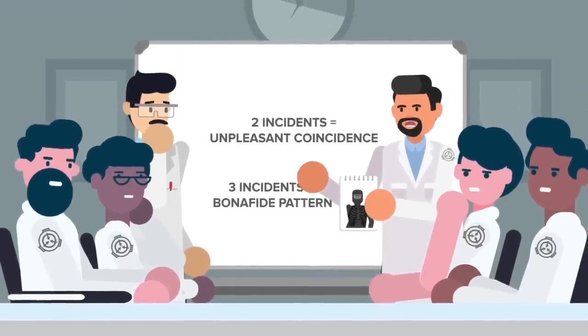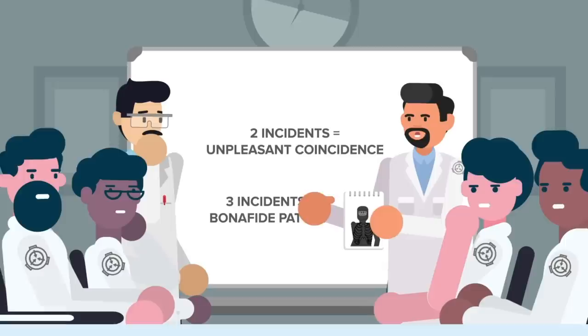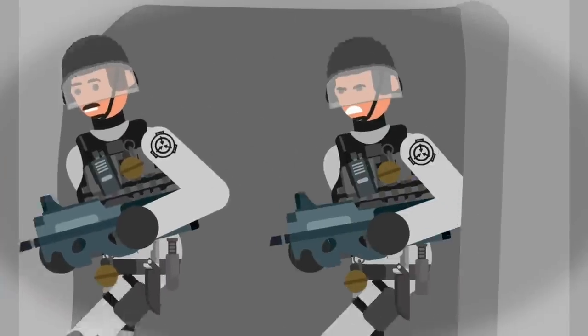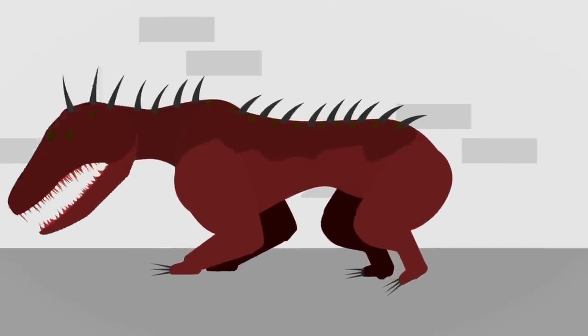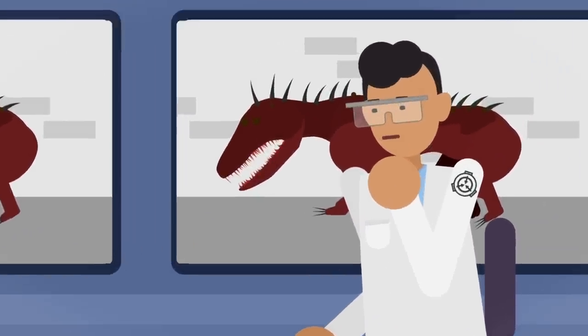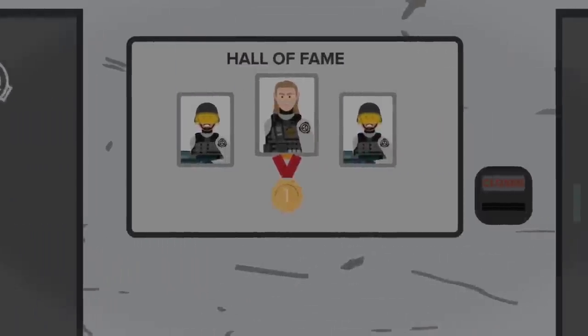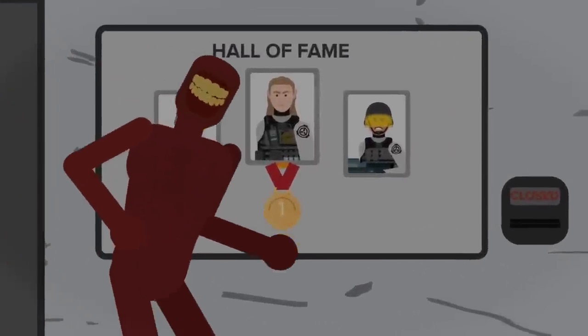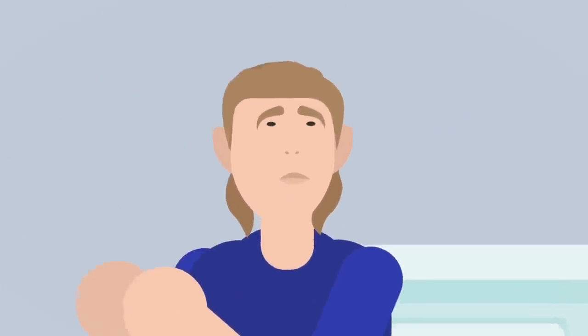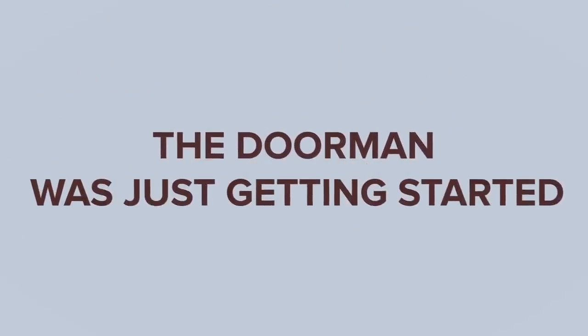This was a particularly frightening case for the SCP Foundation, because it was one of the few anomalies bringing the fight directly to them. Most sentient anomalous beings would do anything to avoid getting captured by the SCP Foundation, and contained in one of their high-security sites, full of experienced researchers and state-of-the-art equipment designed specifically to neutralize their effects. The doorman, however, just seemed to take this as a challenge, turning even the most hardcore personnel on the site into gibbering wrecks with its mere presence. But the doorman was just getting started.